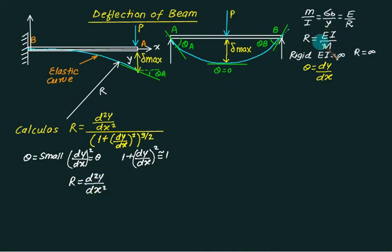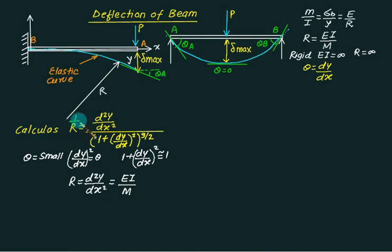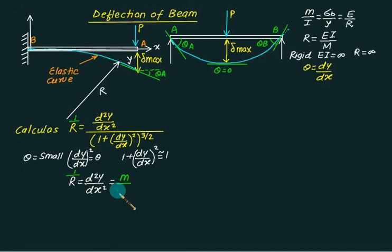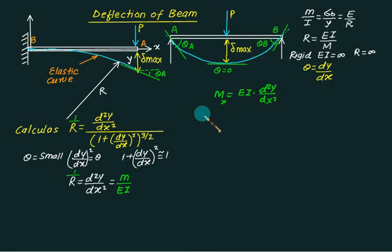We have the formula R = EI/M and also R = d²y/dx². Equating these, and noting that 1/R = M/EI, the governing equation for this chapter becomes: M = EI · d²y/dx², where M is the bending moment at any section x.